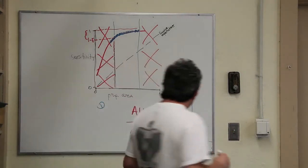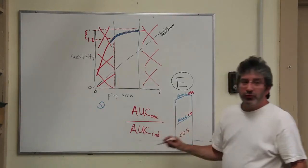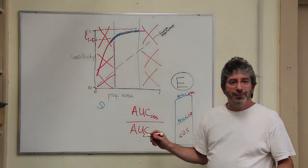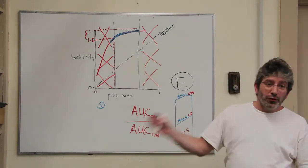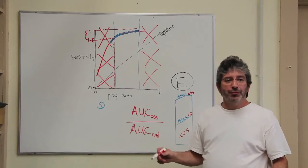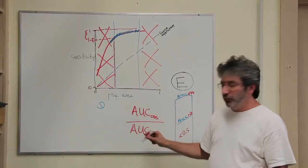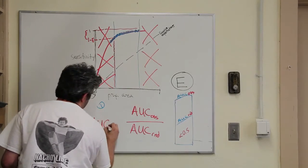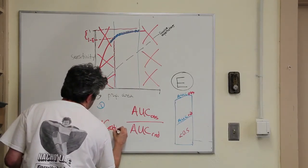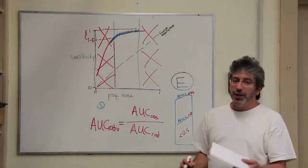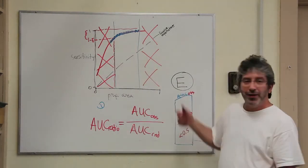And that, if the observed is no better than random, that will be around 1. If the observed is worse than random, it will be below 1. And hopefully we have a good model prediction. And so our AUC ratio, hopefully our AUC ratio will be elevated above 1.